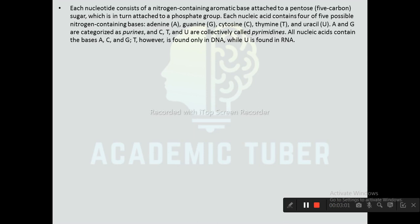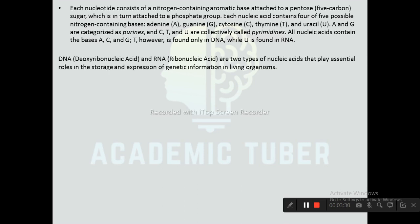Each nucleic acid contains four of five possible nitrogen-containing bases: adenine (A), guanine (G), cytosine (C), thymine (T), and uracil (U). A and G are categorized as purines, and C, T, and U are collectively called pyrimidines. All nucleic acids contain bases A and G. Thymine (T) is found only in DNA, while uracil (U) is found in RNA.